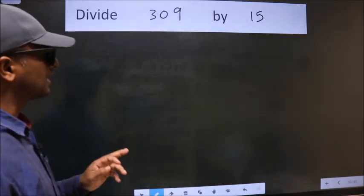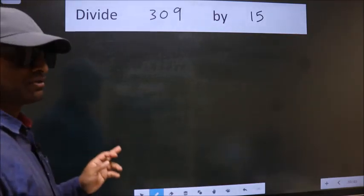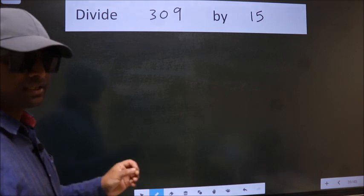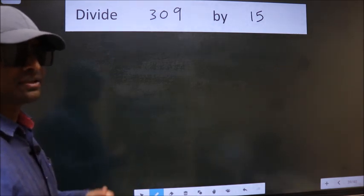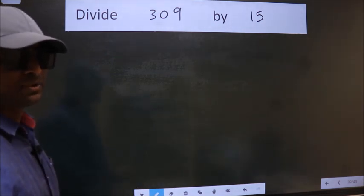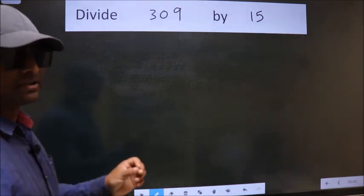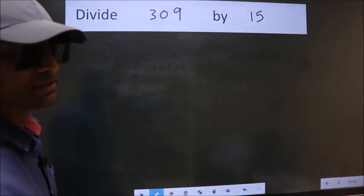Divide 309 by 15. While doing this division, many do this mistake. What is the mistake that they do? I will let you know. But before that, we should frame it in this way.